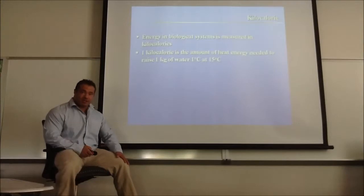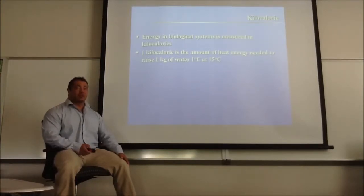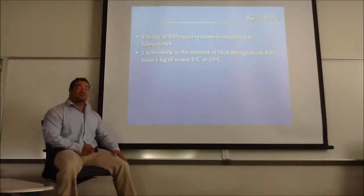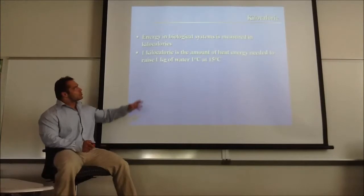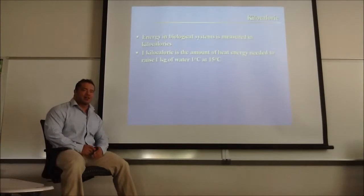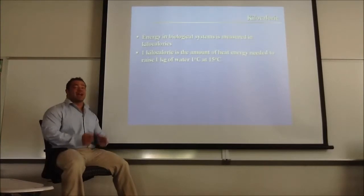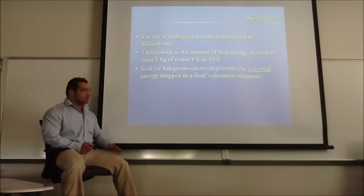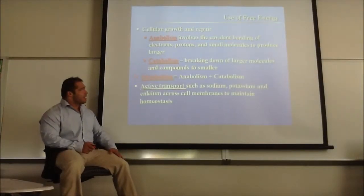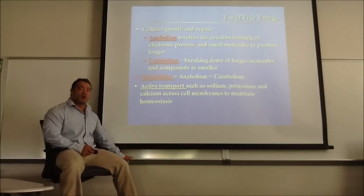Metabolism can be measured, and it's measured in the human body in calories, or kilocalories. Anytime you eat 500 calories from McDonald's, it's actually 500 kilocalories. A kilocalorie is technically the amount of heat energy it takes to raise one kilogram of water one degree Celsius, if that water starts out at about 15 degrees Celsius. It's a very scientific way to measure how much energy expenditure the metabolism is actually incurring. There's anabolism and catabolism, and metabolism is the sum of all of those actions.